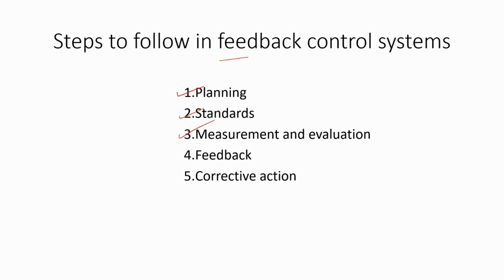Measurement and evaluation: the control system should include a system for measuring and evaluating performance against the established standards. This may involve collecting and analyzing data on financial performance, operational performance, and other key metrics. Feedback: the control system should provide feedback to managers on performance and variances from the established standards. This feedback should be timely and accurate to enable managers to take corrective action. Finally, corrective action: when variances from standards are identified, the control system should facilitate the identification of the causes of these variances and provide guidance on corrective actions.